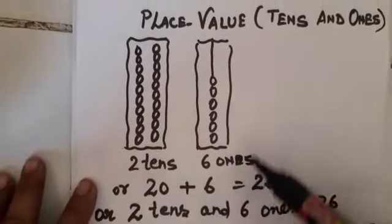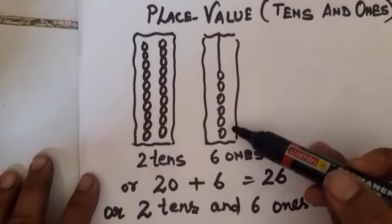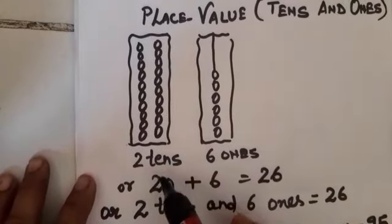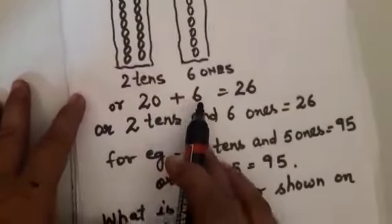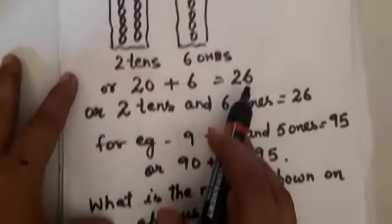6 ones drawn 6 bits. 2 tens drawn 20 bits. Or 20 plus 6 is equal to 26.